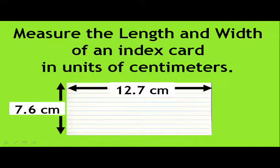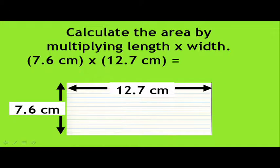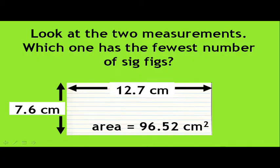All right, in this example, we have an index card that is measured for its length and its width. 7.6 centimeters and 12.7 centimeters. We're going to calculate the area by multiplying length times width. So 7.6 times 12.7 is equal to 96.52 square centimeters. Now we take a look at which measurement has the fewest number of sig figs. In this case, since 7.6 has only two sig figs, then our answer must have only two sig figs. The number is 96.52. We look at the digit next to the 6 and decide that it is a 5. We're going to round up in this case. So the answer is not 96, but rather 97 square centimeters.